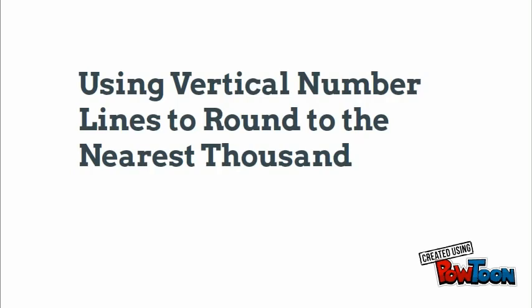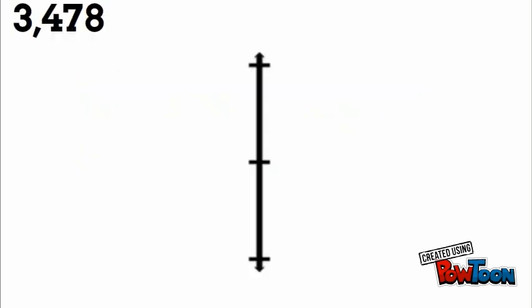What's up fourth graders! Today we're talking about using vertical number lines to round to the nearest thousand. Let's get it cracking. Three thousand four hundred seventy-eight — we're going to round it to the nearest thousands place.